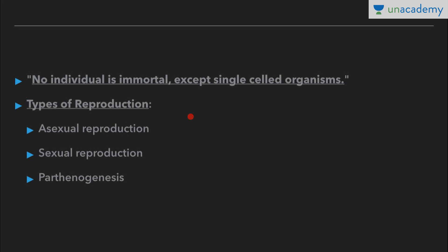On the basis of how many individuals are involved, there are types of reproduction: asexual reproduction, sexual reproduction, and parthenogenesis. In asexual reproduction, there is a single parent, while in sexual reproduction there are two. We will deal with these types of reproduction in detail in our upcoming lessons.